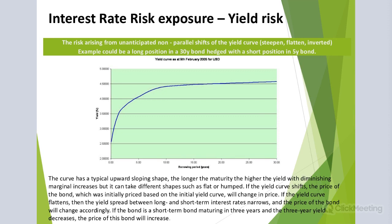This is why the regulator requires monitoring EVE under six regulatory scenarios: short-up, short-down, parallel-up, parallel-down, steepener, and flattener. The four non-parallel scenarios are exactly meant to measure exposure to yield risk and are especially important if the bank has a longer-duration portfolio. If the yield curve shifts, the price of a bond initially priced on the base yield curve will change. The different movements of rates after a shock can expose the bank to PV01 risk.